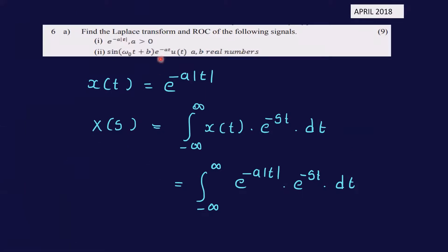Find the Laplace transform and ROC of the following signals. First: x(t) = e^(-a|t|), where a > 0. Second: sin(ω₀t + b) e^(-at)u(t), where a and b are real numbers. For x(t) = e^(-a|t|), X(s) = integral from -infinity to infinity of e^(-a|t|) e^(-st) dt.